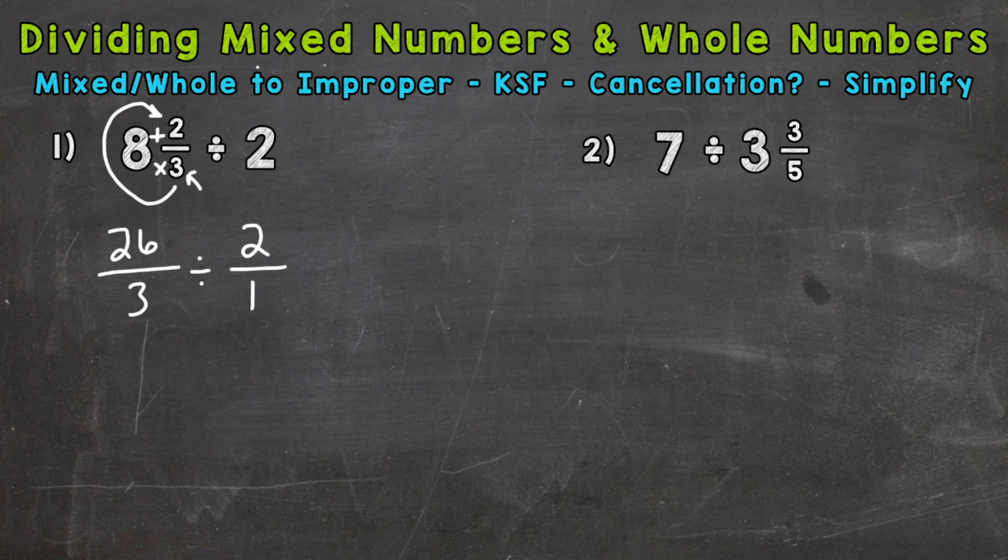So the K, keep, that means we keep our first fraction. So 26 over 3, we keep. We switch to the opposite of division, which is multiplication. The F, flip, that means since we switched to multiplication, we need to flip the second fraction. So the 2 is now the denominator, and the 1 is the numerator. So we end up with 1/2, 1 over 2. Now we're ready to multiply straight across and get our final answer.